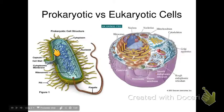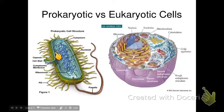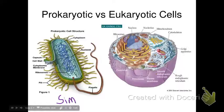Here's another example of a prokaryote versus a eukaryotic cell. The prokaryote has a membrane around it but no membrane-bound organelles — very simple. The eukaryote is very complex, with lots of folds and membrane-bound organelles. So this is a simple cell over here, and this is a complex cell.